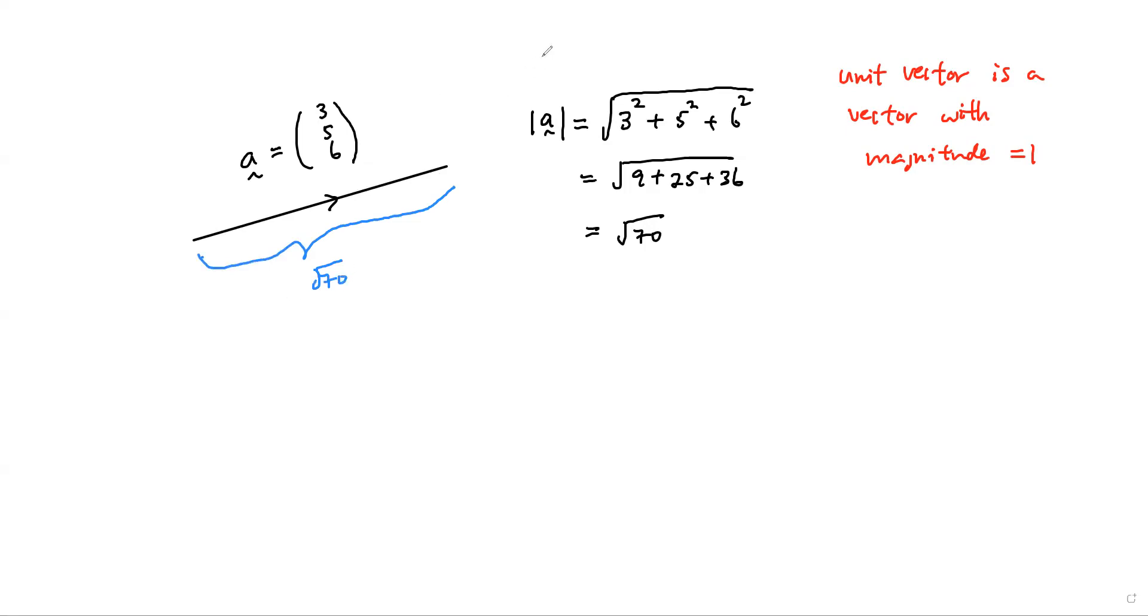So the unit vector of a basically means I want to find a vector, something like that. This vector has the same direction as a, and the magnitude of this vector has to be one. This is one unit.